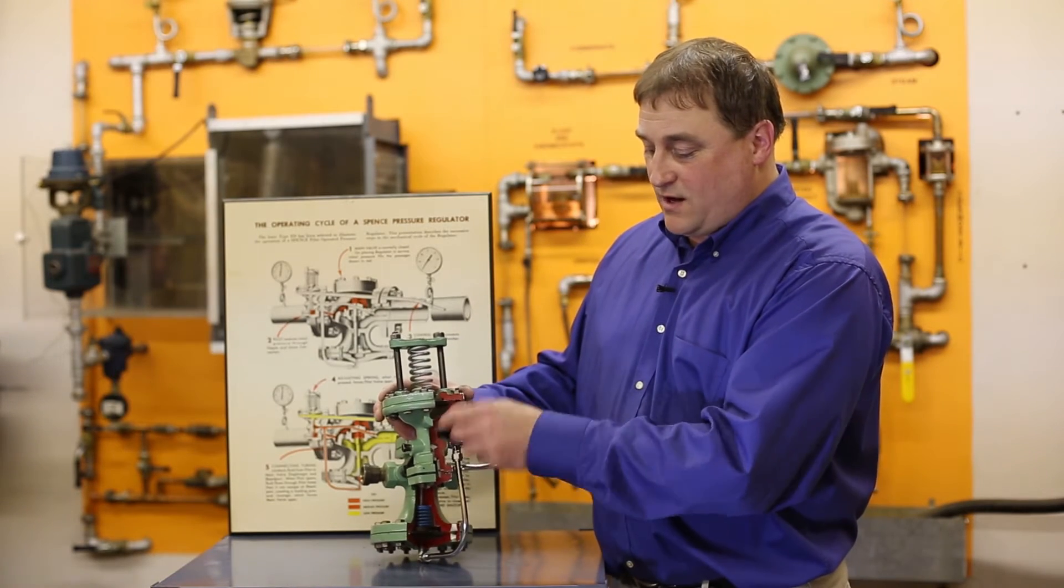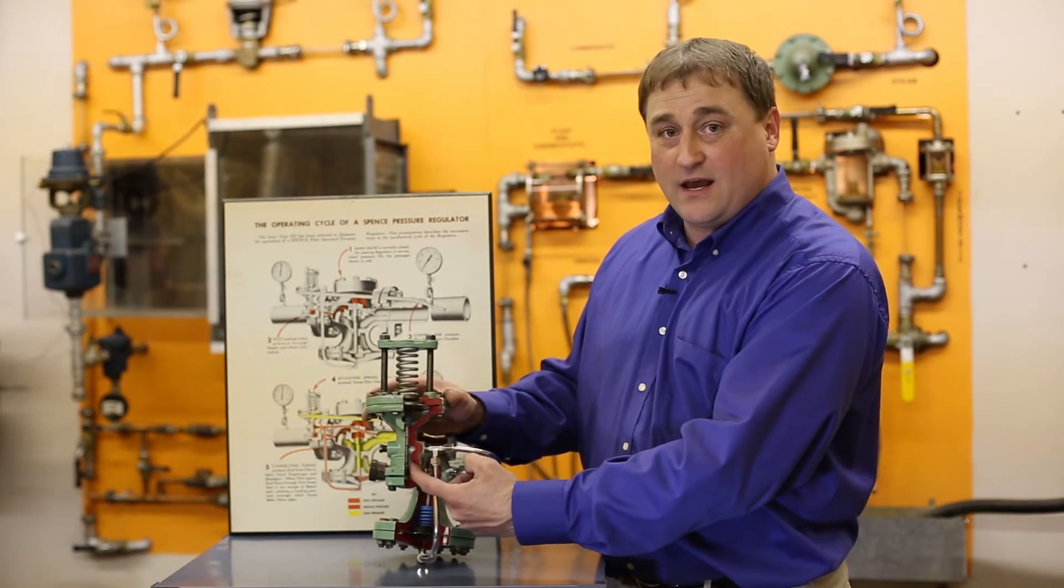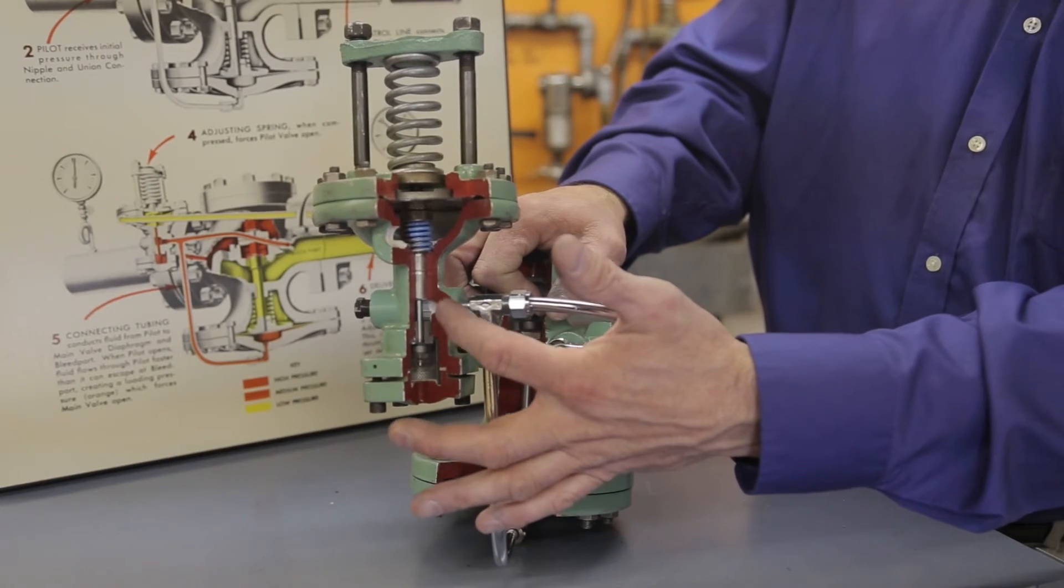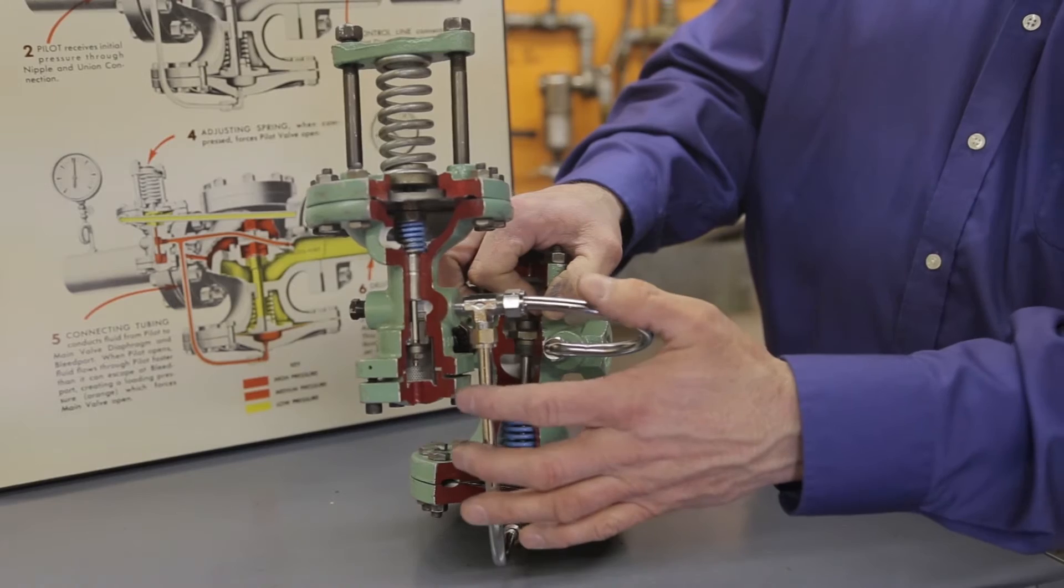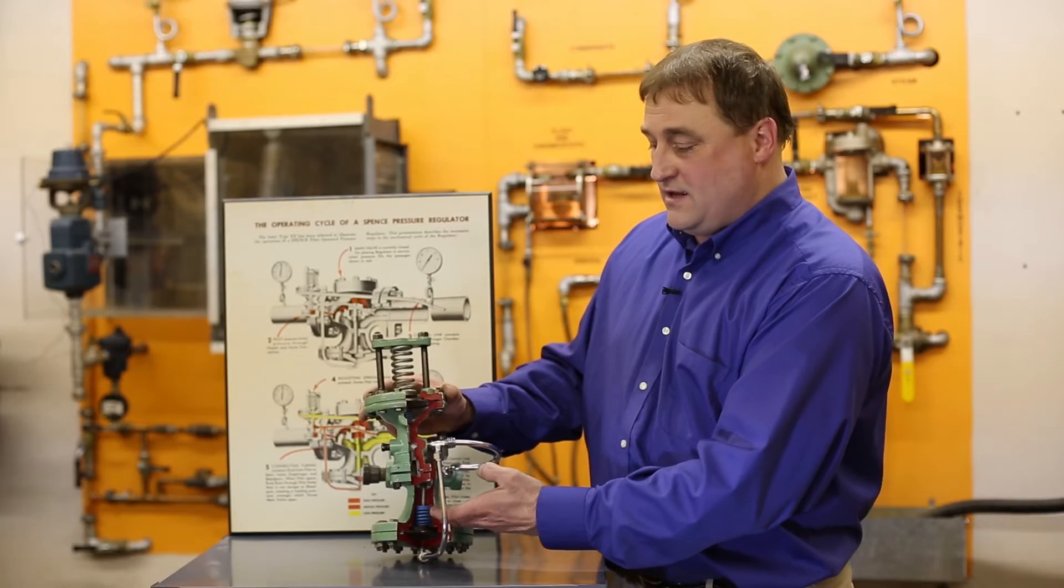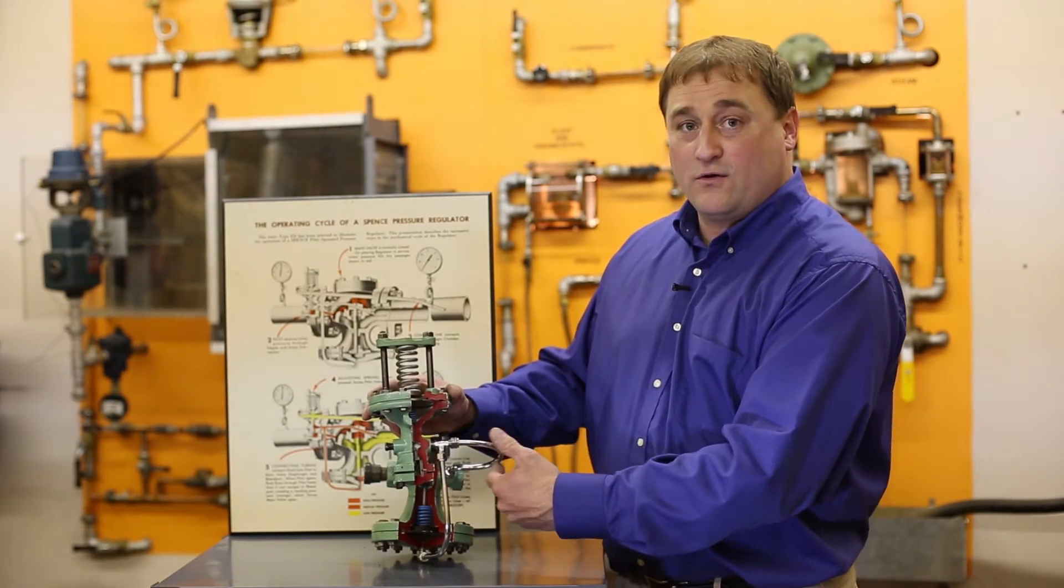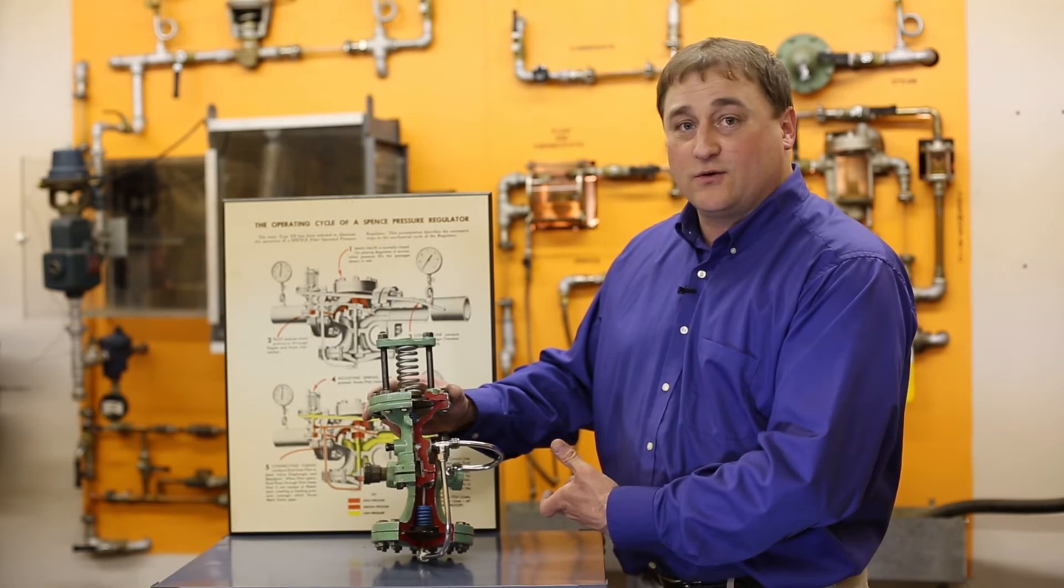It would overcome this pressure, push down on the smaller pilot-operated valve, which then increases the pressure in the tubing, and then would stroke this valve and try to get more flow through the valve to increase that delivery pressure.